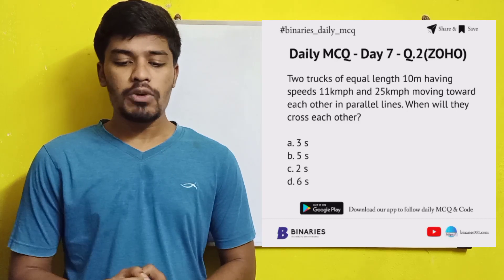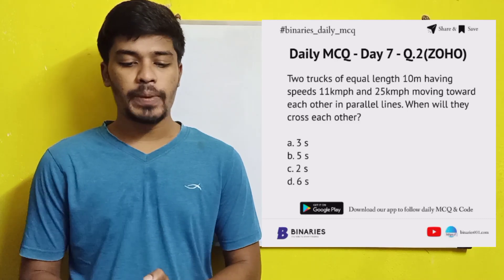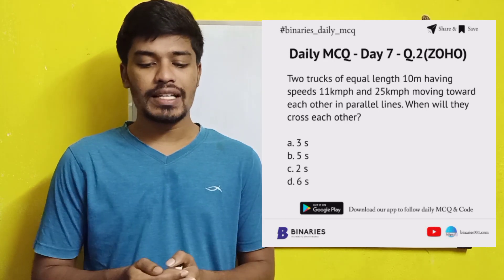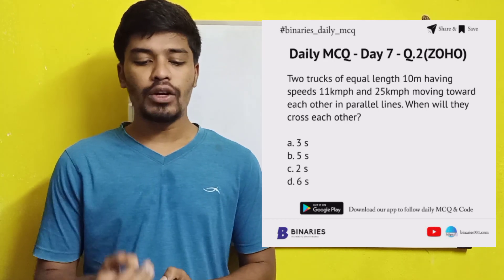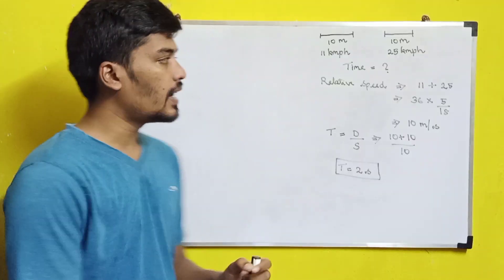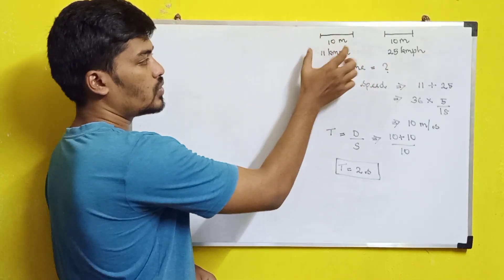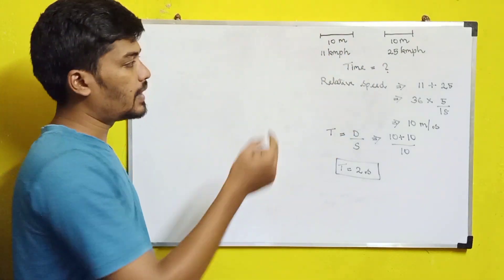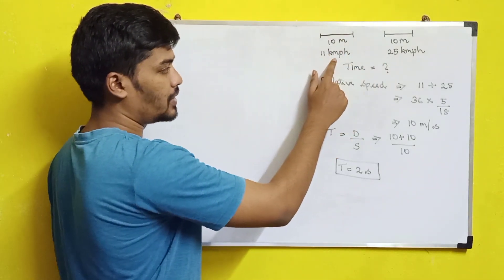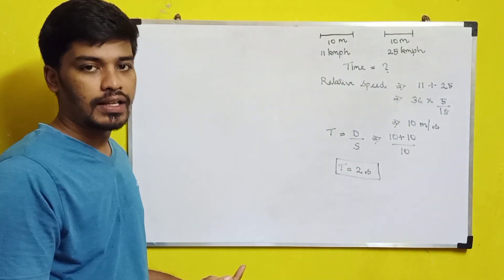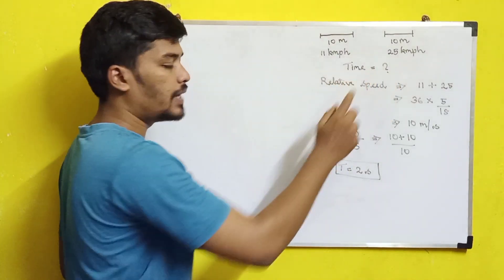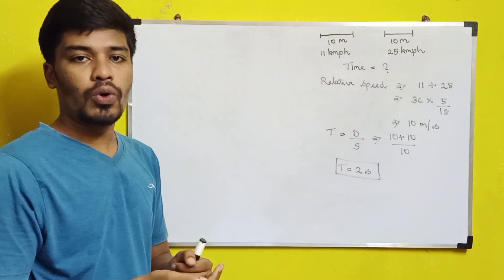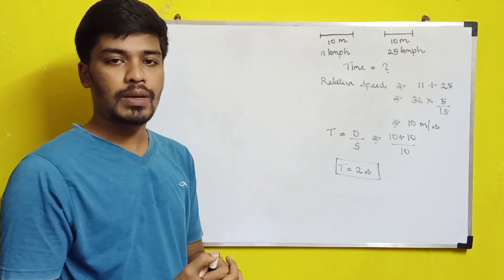The second question: Two trucks of equal length, 10 meters each, have speeds of 11 km/h and 25 km/h and are moving toward each other in parallel lines. When will they cross each other? We have two trucks moving in opposite directions, so we apply the concept of relative speed.